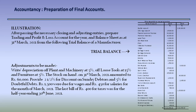Illustration: after passing the necessary closing and adjusting entries, prepare a trading and profit and loss account for the year and balance sheet as at 31st March 2021 from the following trial balance of a manufacturer. Here is the trial balance — debit side has all expenses and assets, credit side has all liabilities and incomes. By totaling the trial balance it is matching. With the trial balance items, we need to prepare the final accounts, making the following adjustments: depreciation of plant and machinery at 5%, loose tools at 15%, and furniture at 5%; closing stock on 31st March 2021 amounted to Rs. 60,000; provide 2.5% for discount on sundry debtors and 5% for doubtful debts.